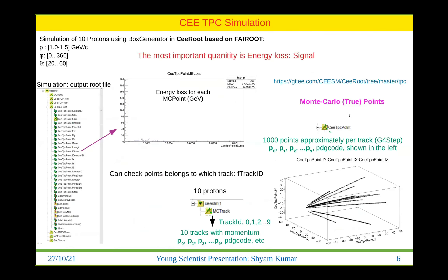I generated 10 protons using a box generator in the CbmRoot framework, which is based on FAIR-Root. This generates an output file that includes all the track information. Since we know everything about the track, it is stored in the Monte Carlo track branch. Each track has IDs, momentum, and when a track passes into the detector volume it gives Monte Carlo points — for each point we can get the momentum, track ID, and match one-to-one which track it belongs to.